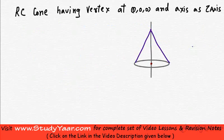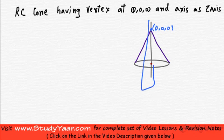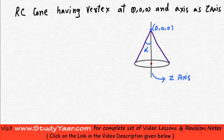Now let's find out the equation of a right circular cone which has the vertex at the origin — that is (0, 0, 0) — and axis as the z-axis. We are saying this is the z-axis. Let's suppose that the constant angle, which is the semi-vertical angle, is alpha. We want to find out the equation of such a cone.